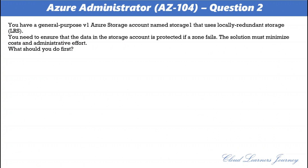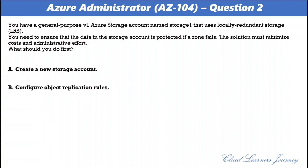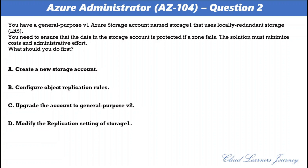Question number two. You have a general purpose v1 Azure storage account named storage1 that uses locally redundant storage (LRS). You need to ensure that the data in the storage account is protected if a zone fails. The solution must minimize the cost and administrative effort. The correct option is C: upgrade the account to general purpose v2. General purpose v1 supports GRS or read-access GRS, but the question was about least cost. Least cost is ZRS, which is only supported for v2 and premium file or block storage.